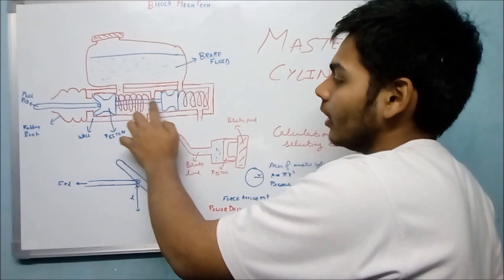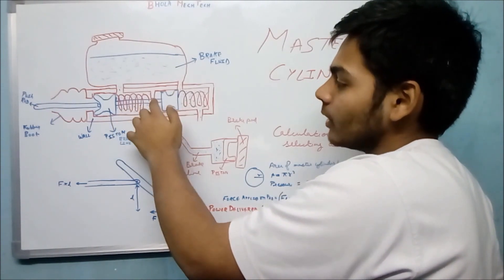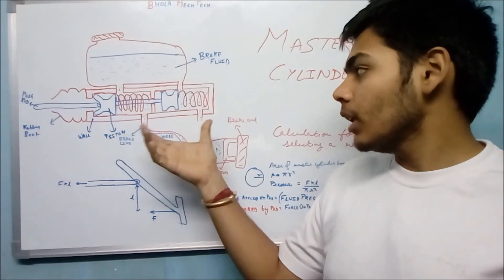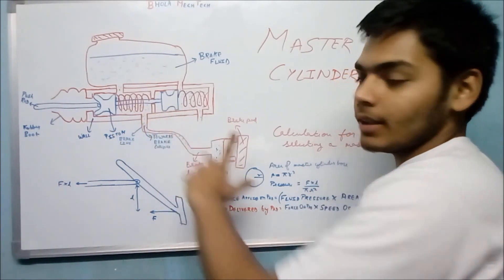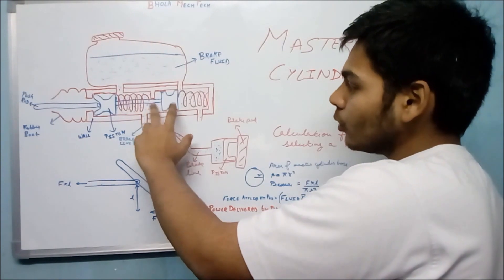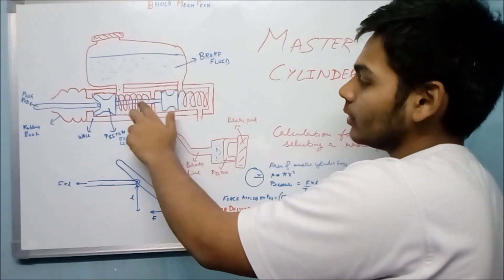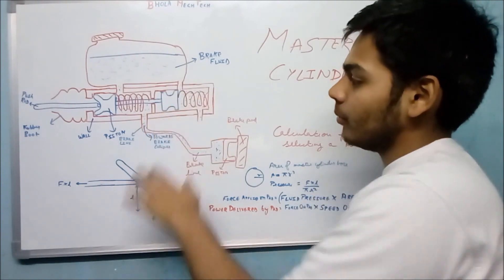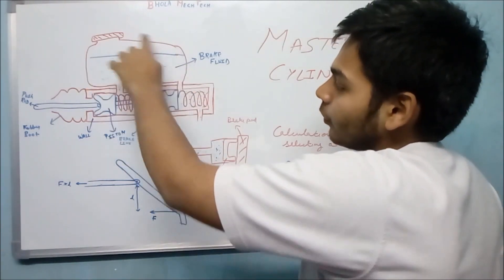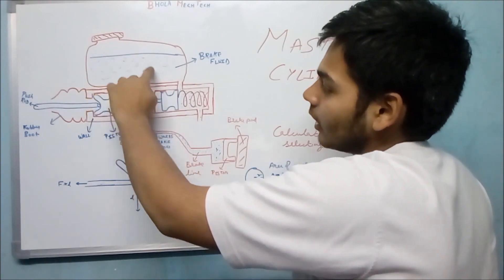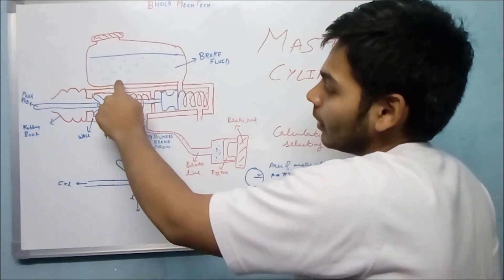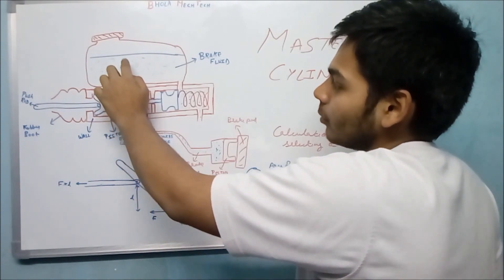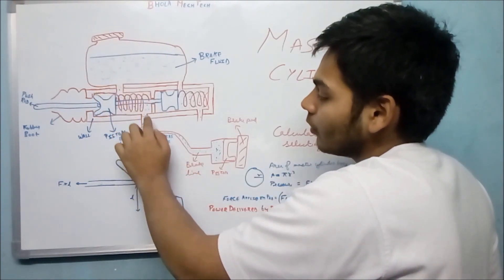Another push rod is connected from here to another piston inside this master cylinder. Nowadays this type of master cylinder is commonly used, and it has two cylinders inside it. This is the fluid container — the brake fluid container — and this is the brake fluid inside it. The brake fluid comes through this port which connects the master cylinder to the brake fluid, and this is the port for the brake line.